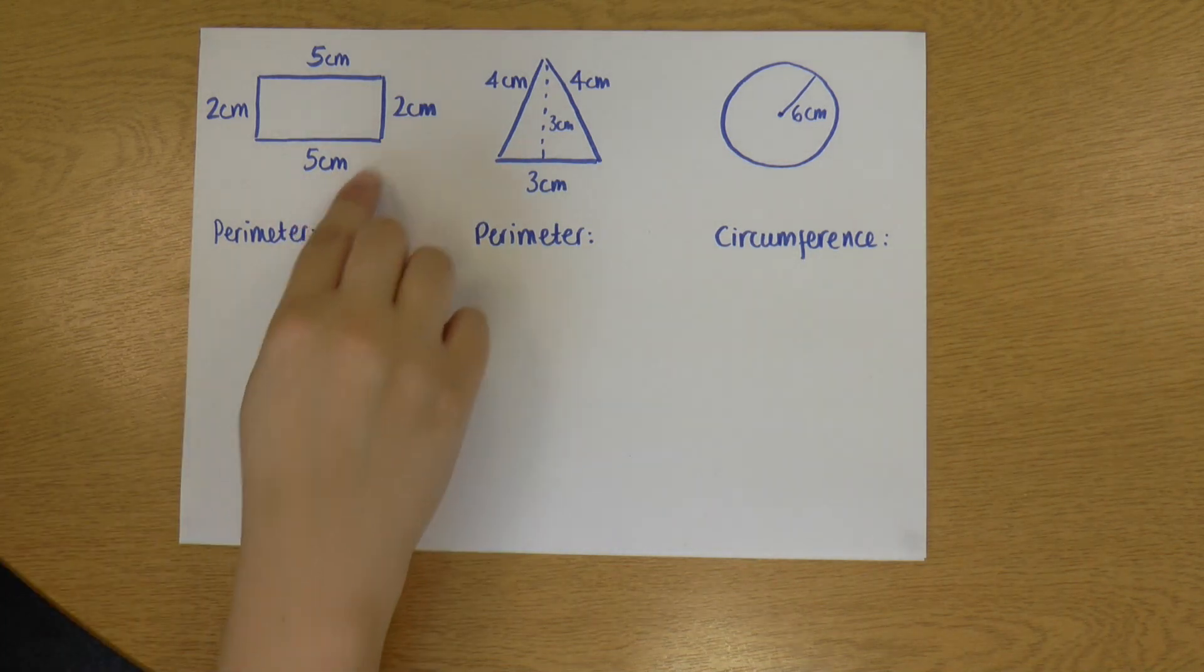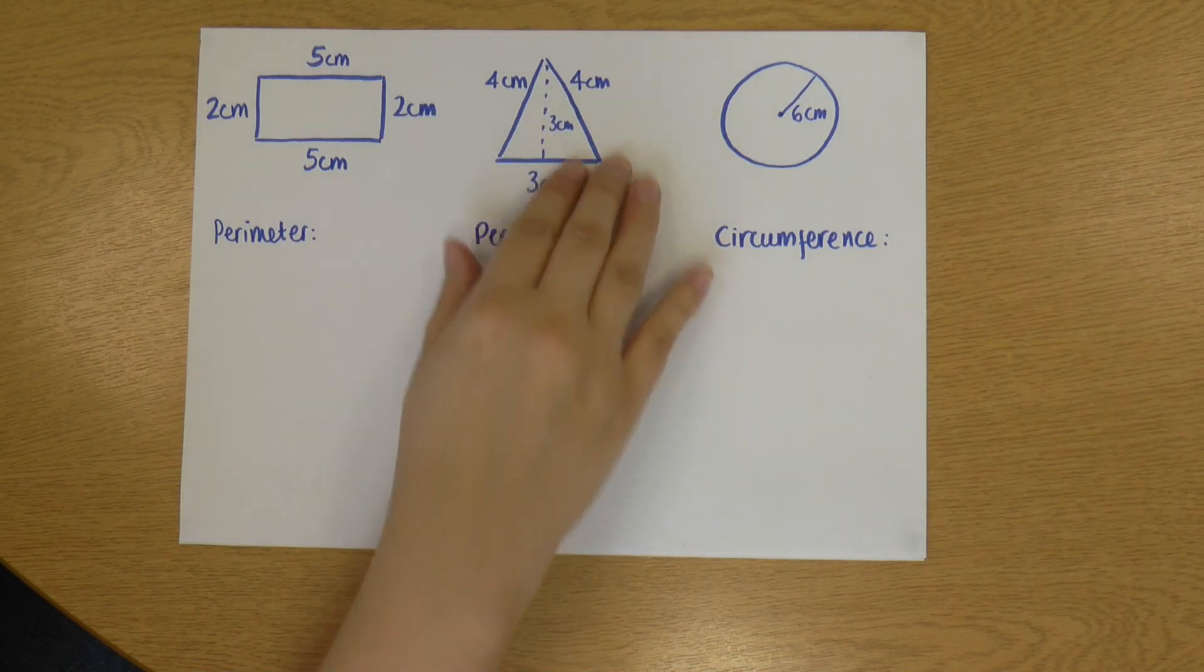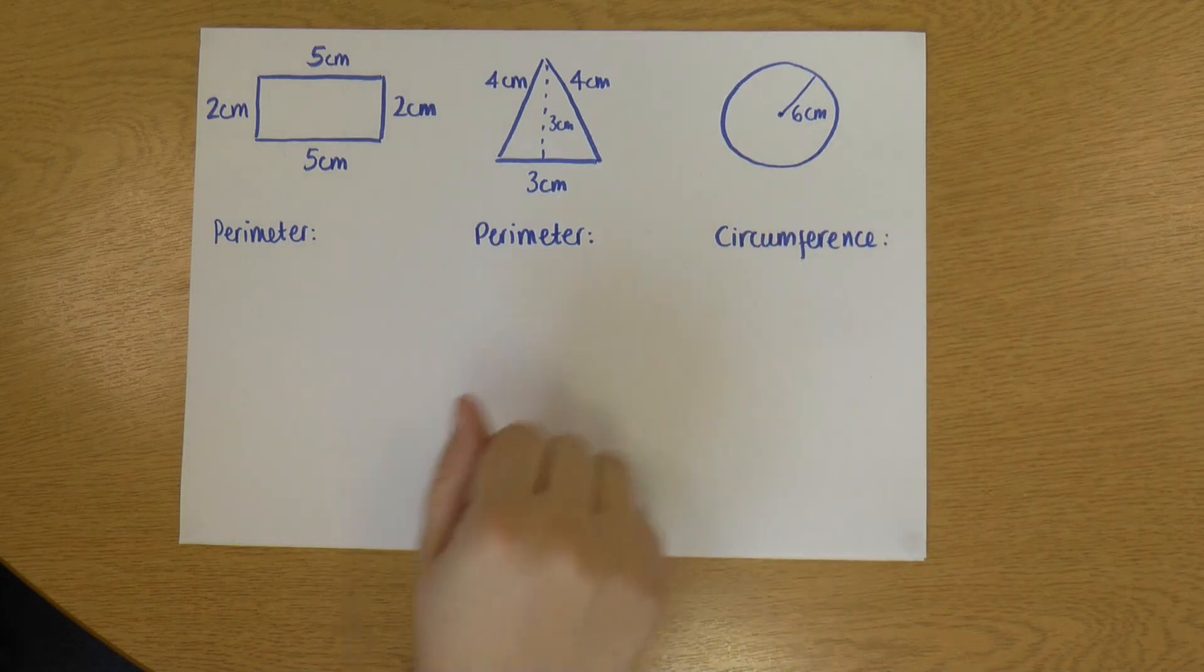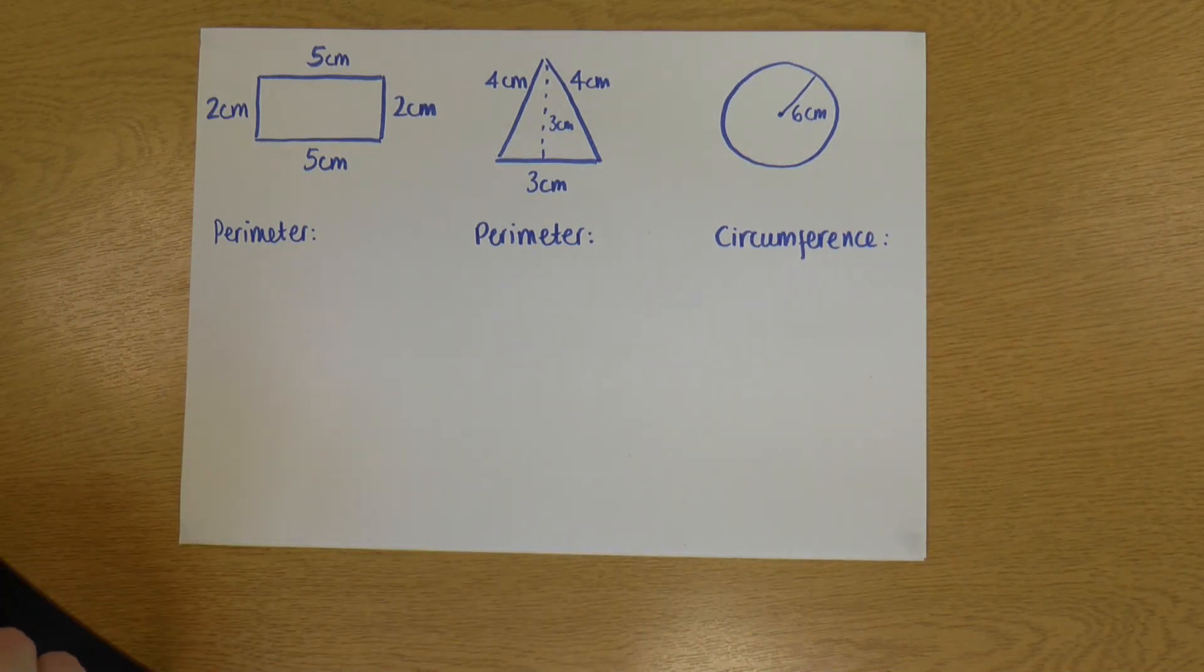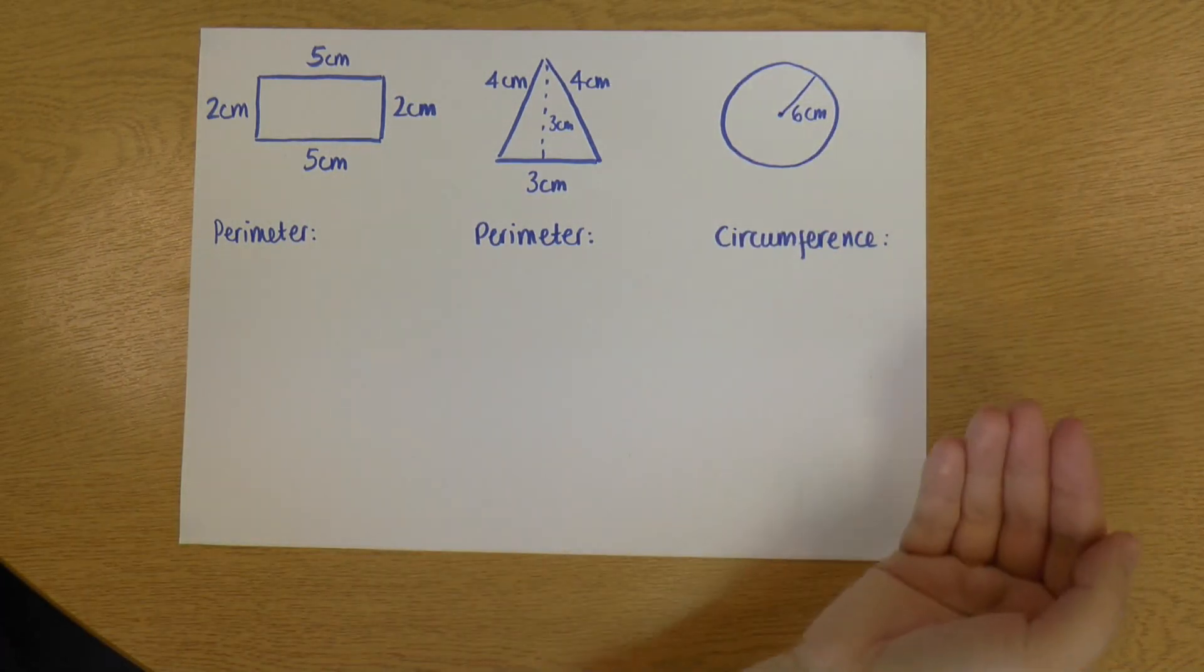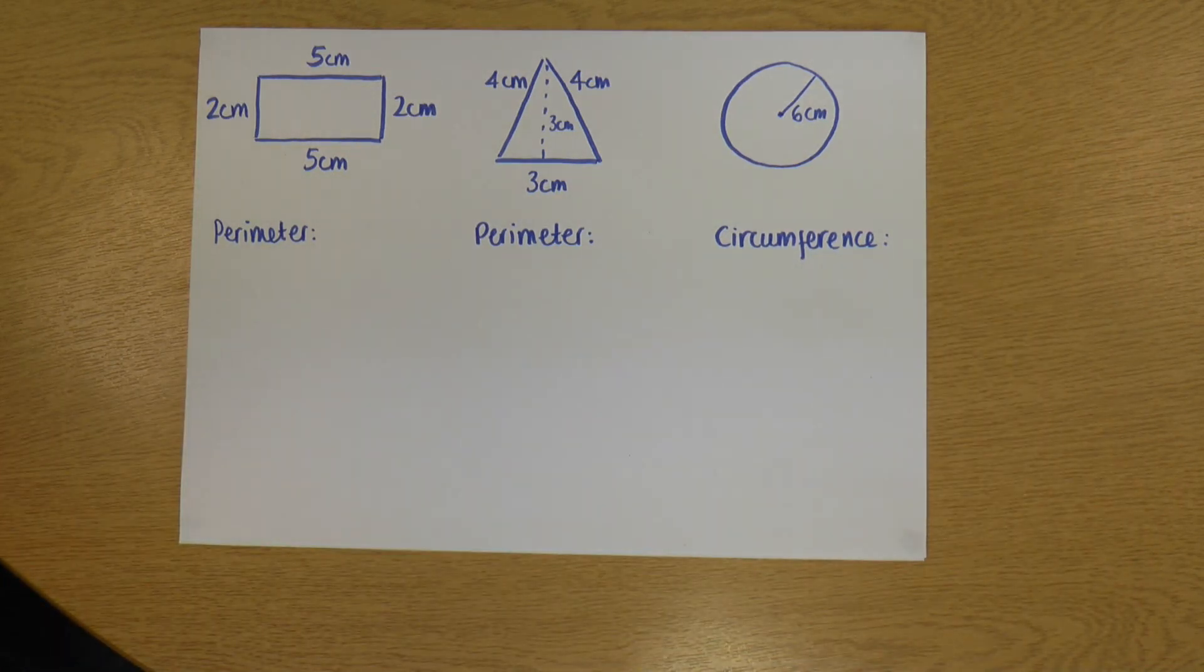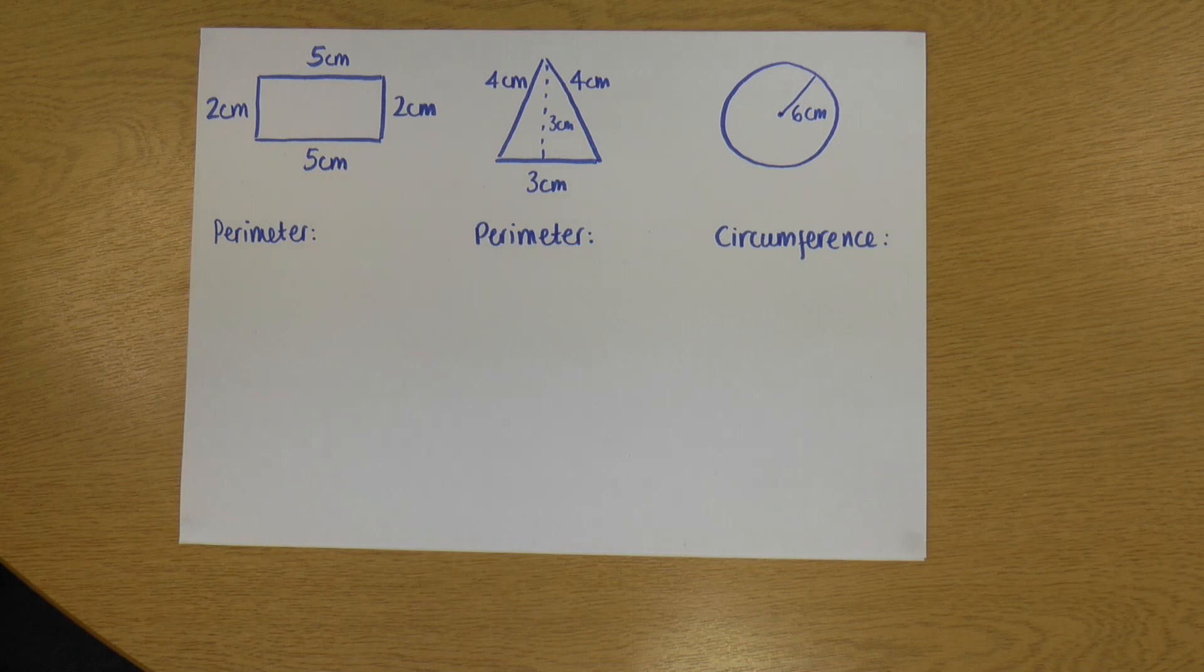So you'll notice that I've called the perimeter for these two shapes. Rectangles and triangles have perimeters. However, circles are a little bit special and a circle's perimeter is called the circumference. So that's why this one's got a slightly different name, but it means the same thing.